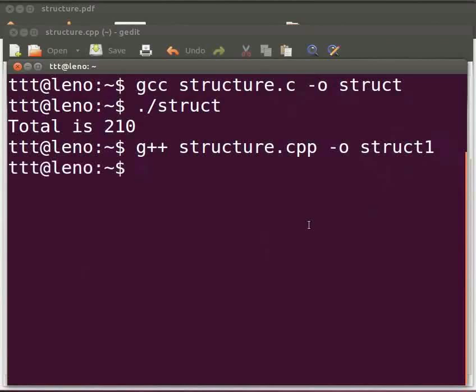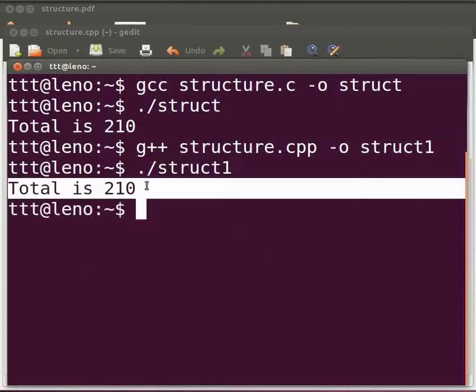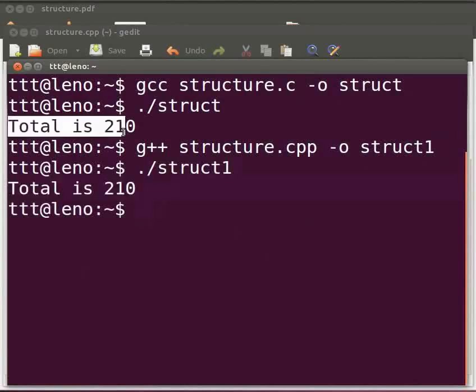To execute, type dot slash struct1. Press enter. The output is displayed as total is 210. You can see that the output is same as our C code. Now let us go back to our slides.